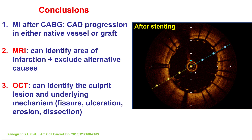Our case shows that in patients who have a myocardial infarction after bypass, it can be due to either progression of disease in the native vessel or due to the bypass graft, with the vein grafts being the more likely culprit several years after the bypass has occurred. Second, if there is no obvious culprit, MRI can first help establish that a myocardial infarction indeed occurred and also exclude alternative causes such as Takotsubo or myocarditis.